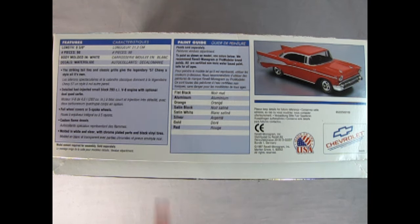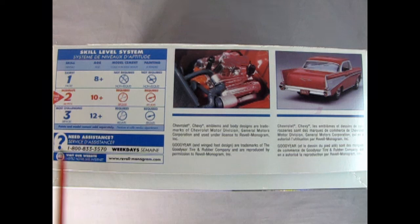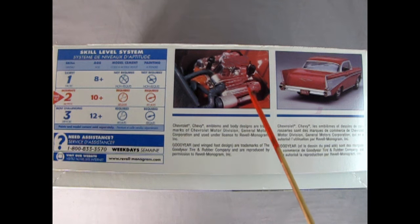Turning the box on this side we see this is a skill level 2 kit for ages 10 and up. Glue is required and painting is required. There's that nice 1957 fuel injected Chevy motor. The first year for this actual engine. And then we get a nice rear three-quarter shot of the back.